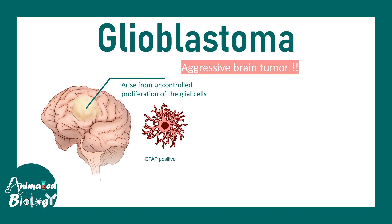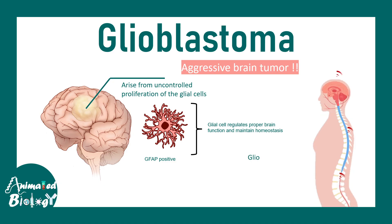Glioblastoma is actually one type of astrocytoma where the astrocytes proliferate in an uncontrolled manner. Glial cells generally regulate proper brain function and maintain homeostasis. At any point of time, if you need more information about glial cells, click on the video in the i button.